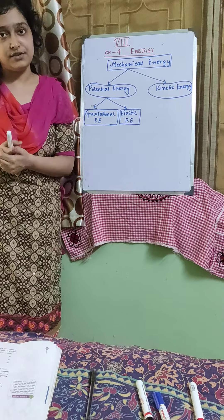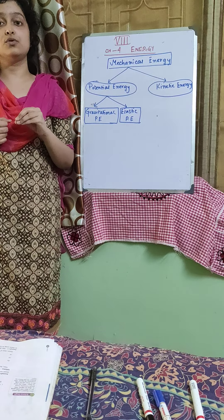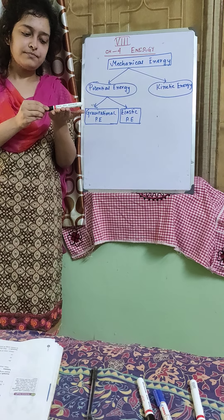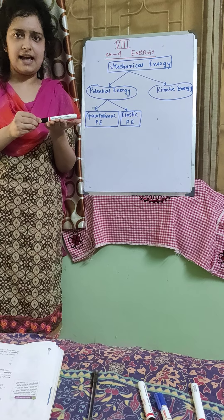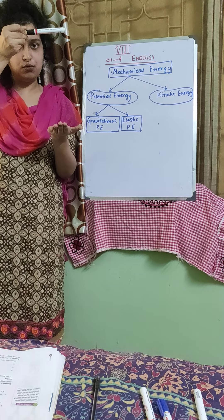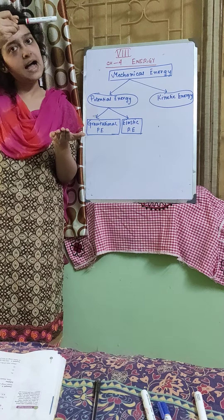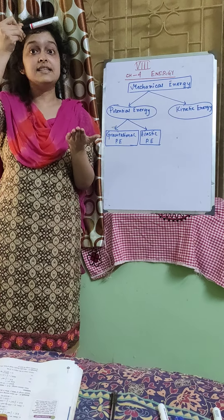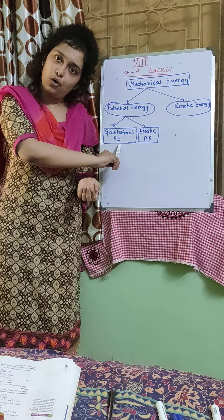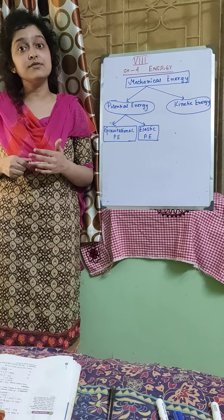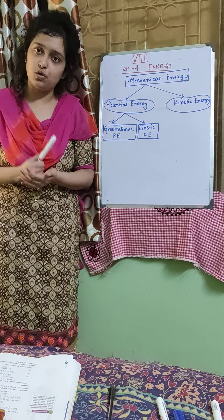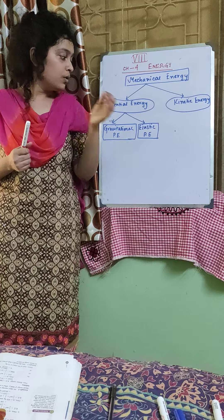Gravitational potential energy is that form of potential energy which is stored in a body due to the raised height of the body. Suppose this is the ground and this is the marker lying on the ground. When I lift the marker above the ground, it is raised to a certain height. Due to this raised position, it acquires the form of energy known as gravitational potential energy. Why gravitational potential energy? Because we are doing some work against the force of gravity — we are spending some energy raising the stone.